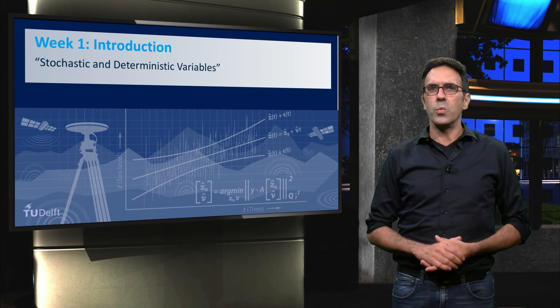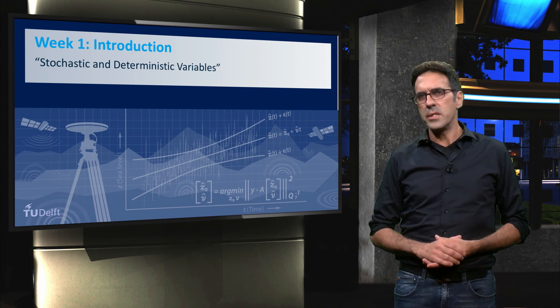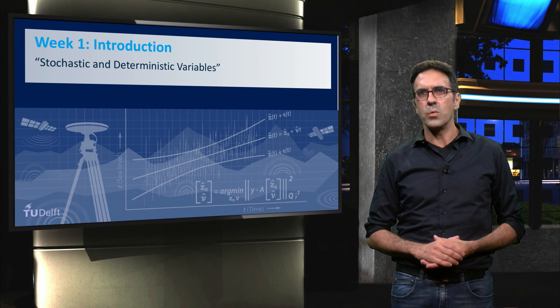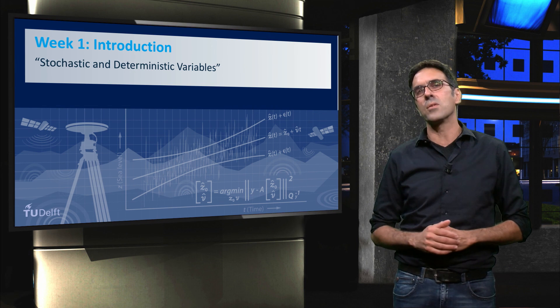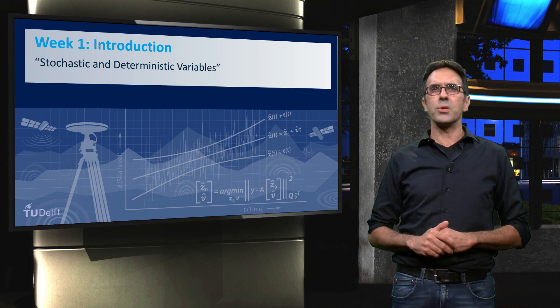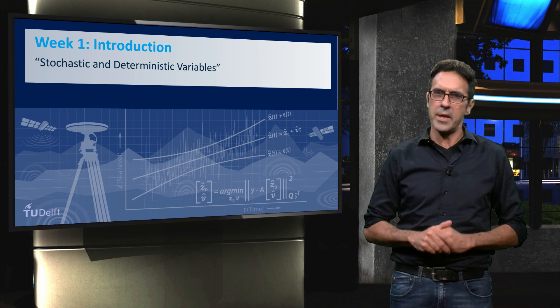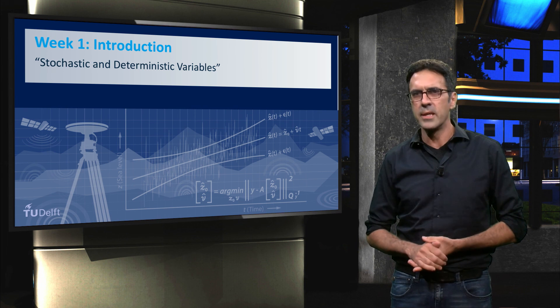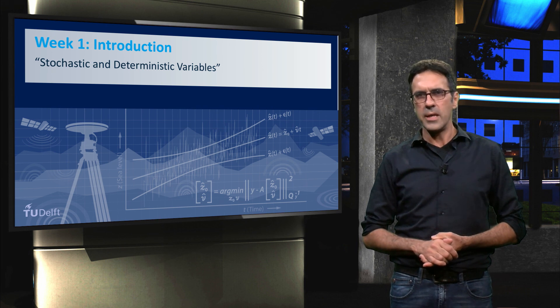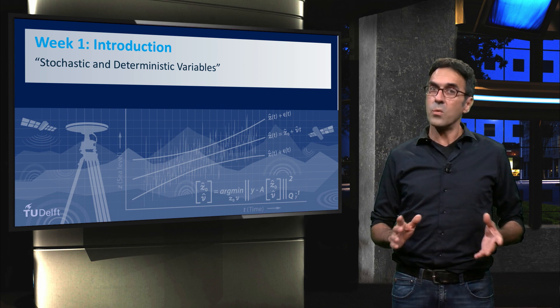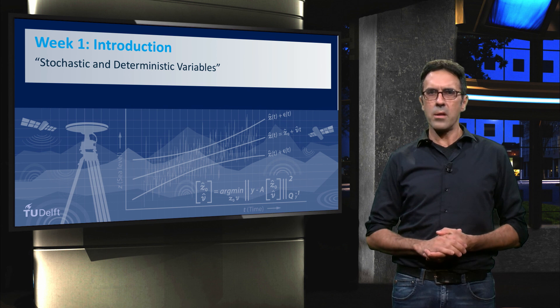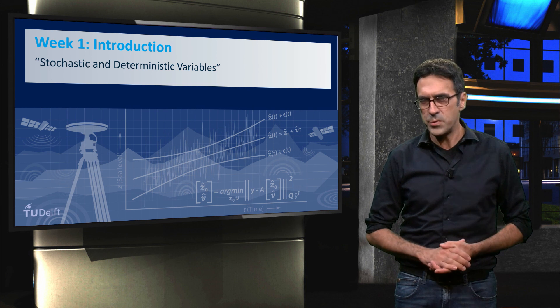In this video we discussed the nature of the ingredients of an estimation problem. We distinguished parts which are deterministic from variables which are stochastic or random. We also showed how the process of linking of the mathematical model to the real world can introduce errors, labelled as idealization accuracy. In the following we will assume that the mathematical model is always an adequate description of reality.